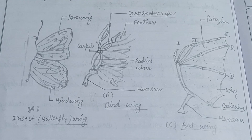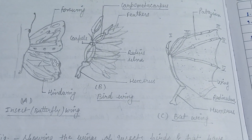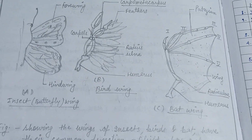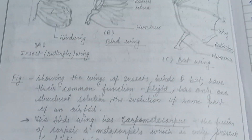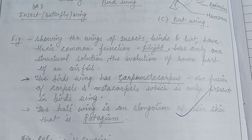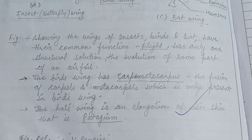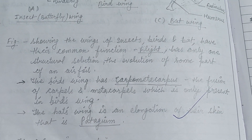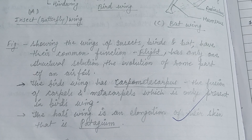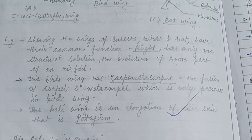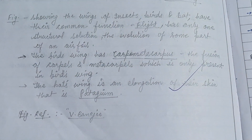In this figure, the insect wing, bird wing, and bat wing show analogous organs. The bird wing has a carpometacarpal — a fusion of carpals and metacarpals — which is only present in the bird's wing, whereas the bat wing is an elongation of skin called the patagium.